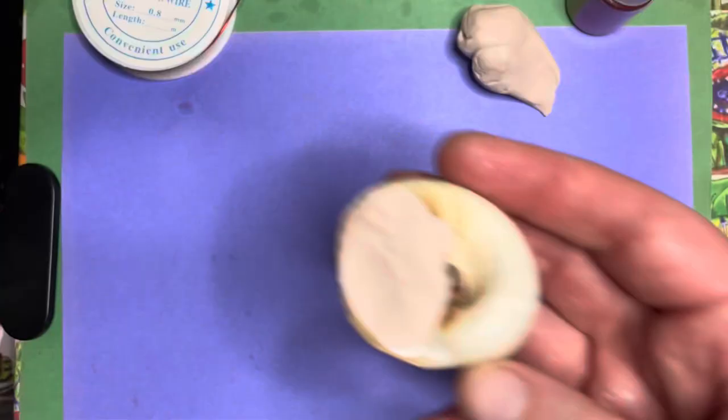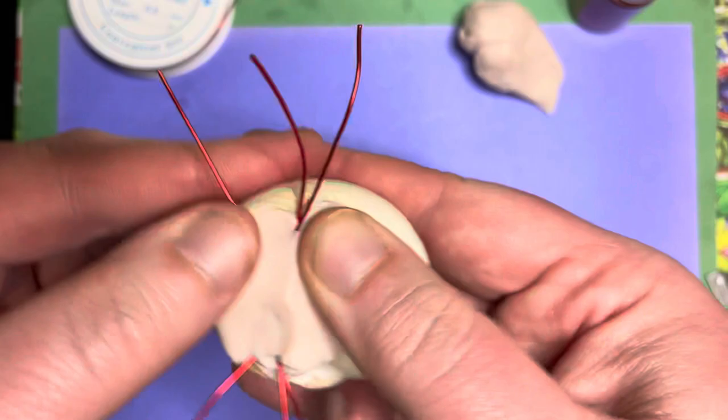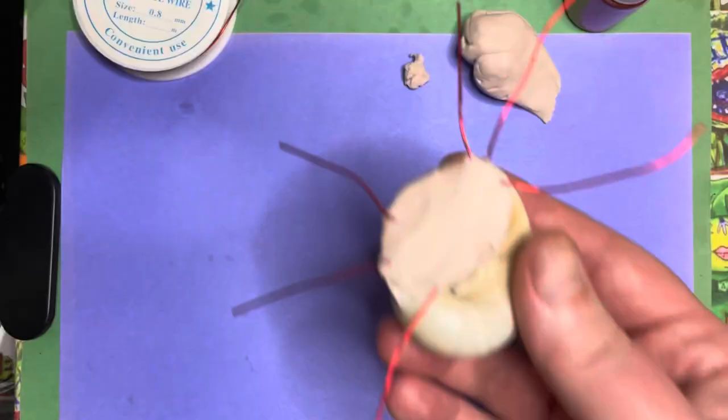So once you've got the aluminum foil inside your shell, take your wire that's been wrapped in the clay and just smush that in and then use your fingers and smooth that down. So you've got your legs sticking out.